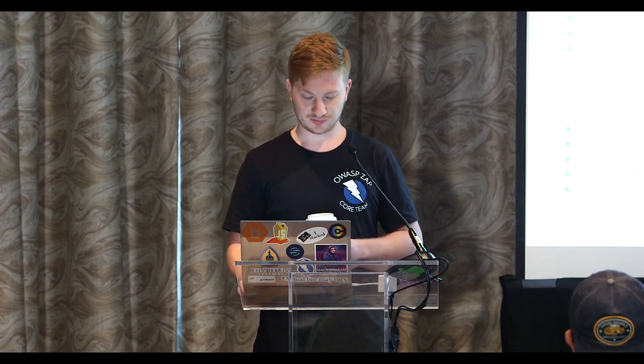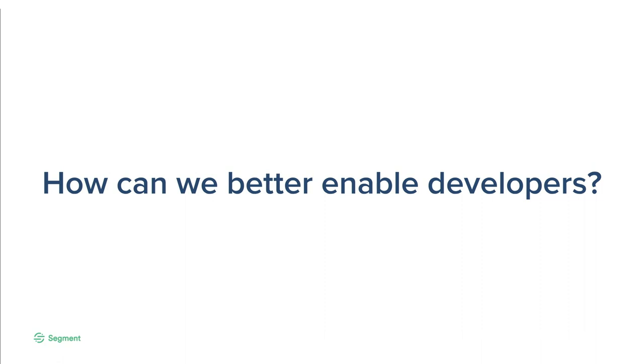But Zap isn't necessarily trivial to start using. Tons of features — a lot of them have really cool configurations hidden in context menus of context menus, so it's kind of hard to find these things. Even a lot of security people will go through training just to use it. So we're asking ourselves on the team: what can we do to make this tool better enable developers? What are the things we can look at to improve this?